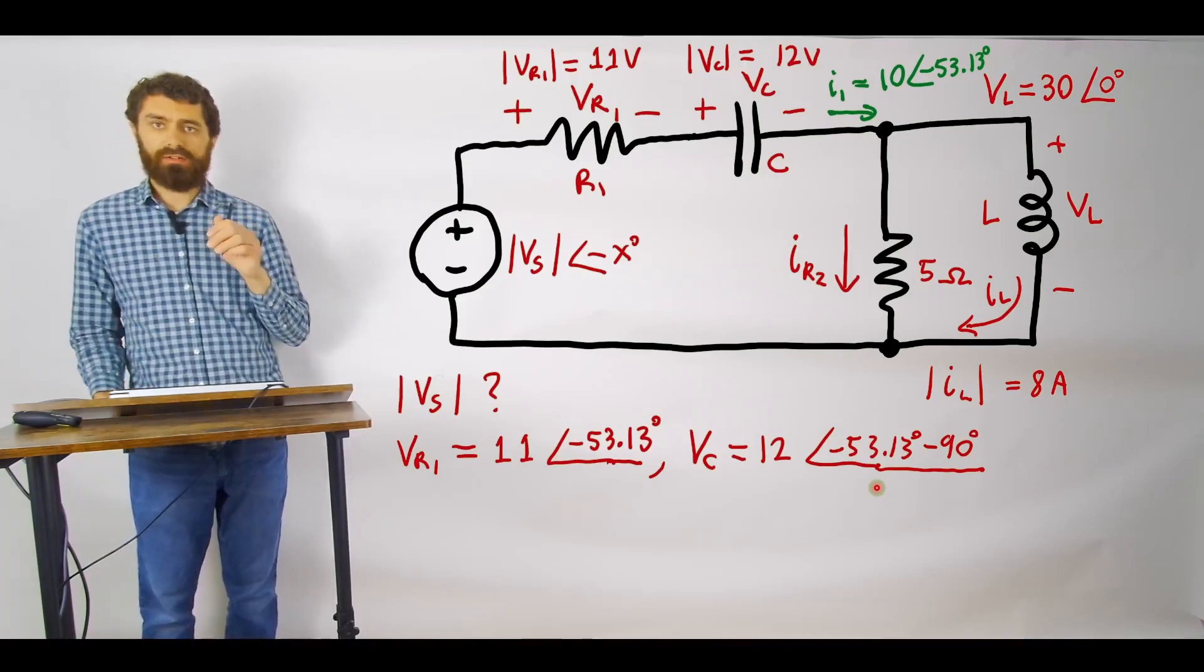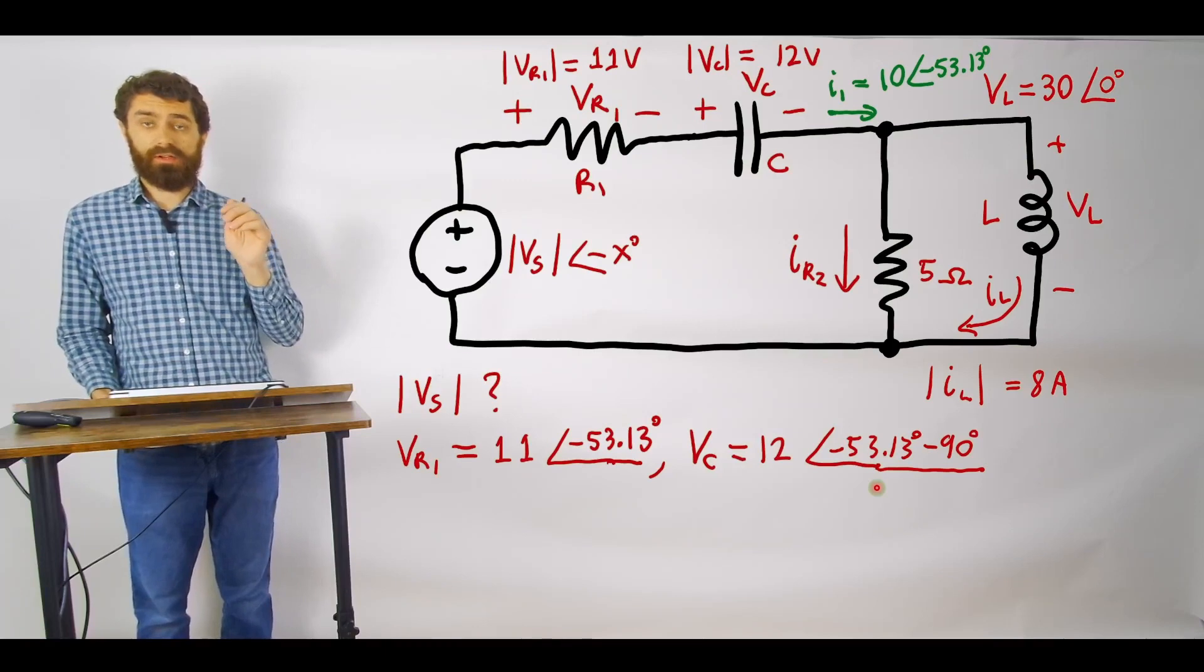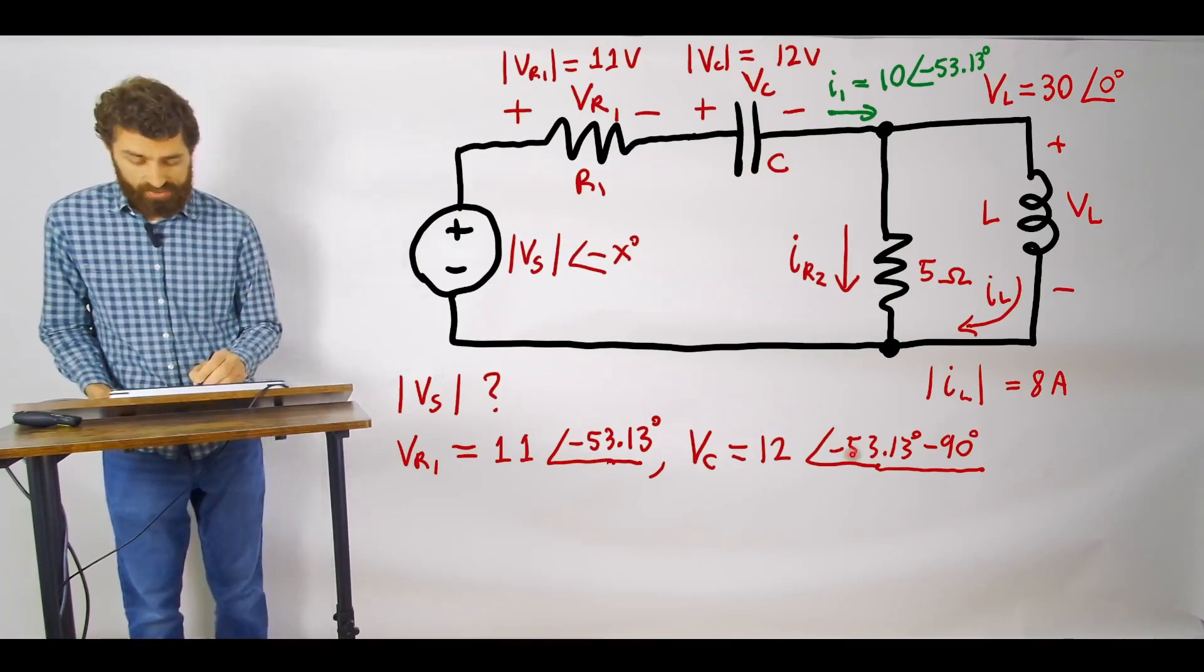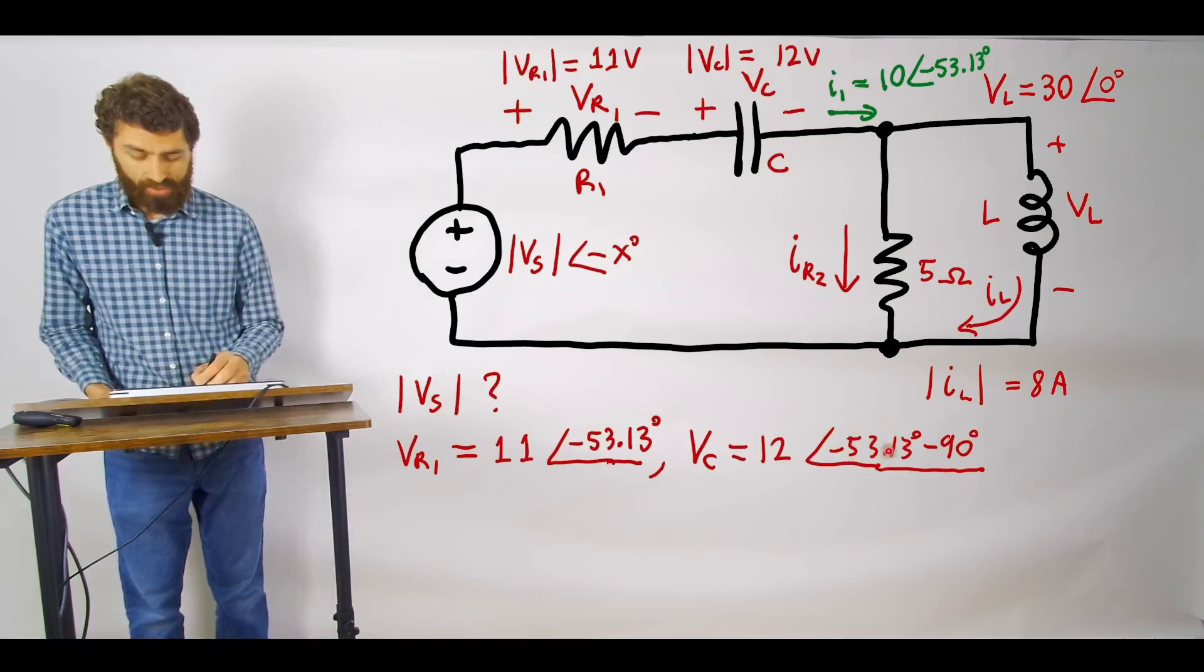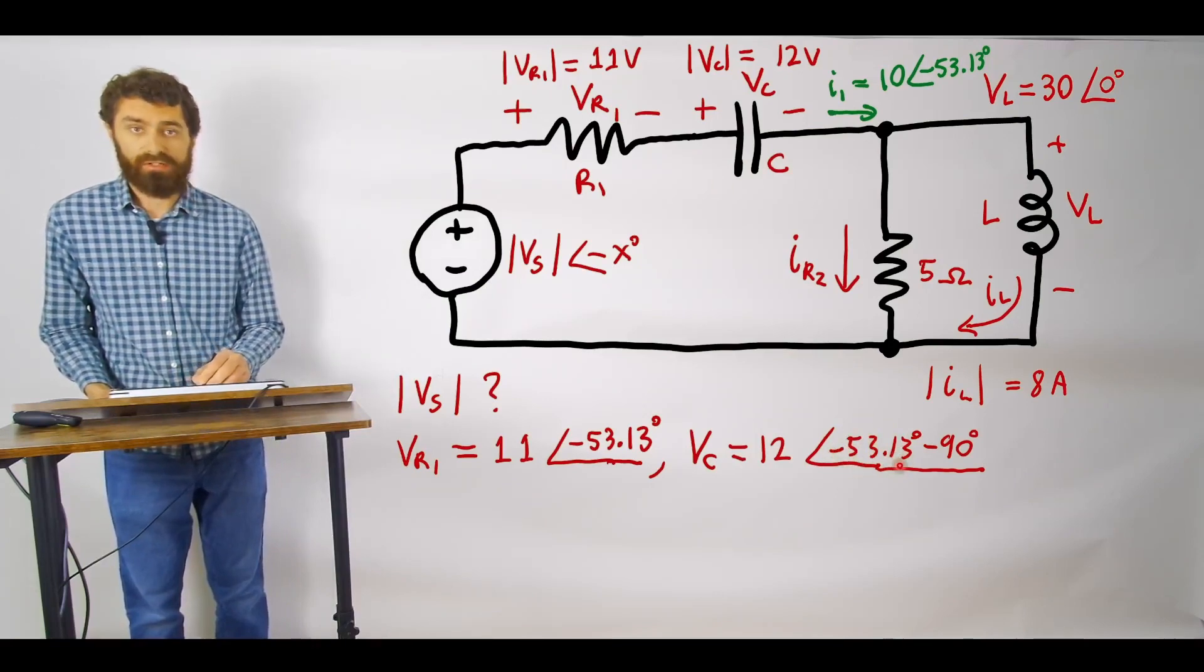its angle will be different because we know that the voltage always lags the current through on a capacitor by 90 degrees. So it's going to have,